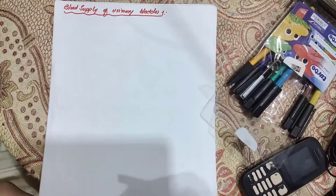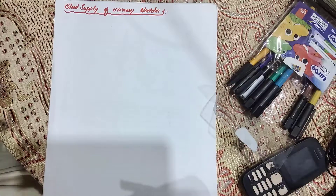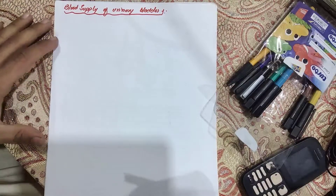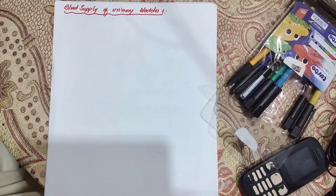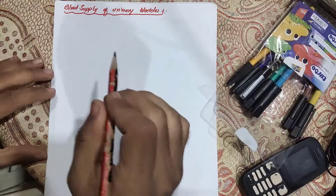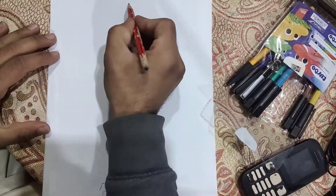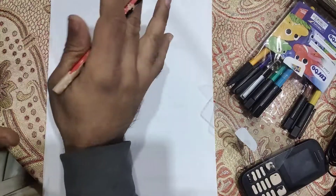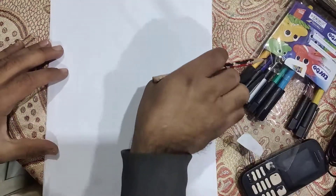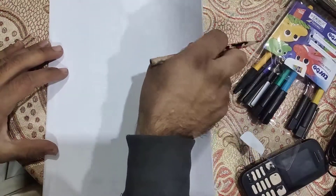First of all I should draw a diagram very clearly for you. Then we will see the blood supply and everything — those arteries which are responsible to supply blood to the urinary bladder. So let me make a diagram first; from the diagram we will clear every doubt and understand the blood supply very clearly.